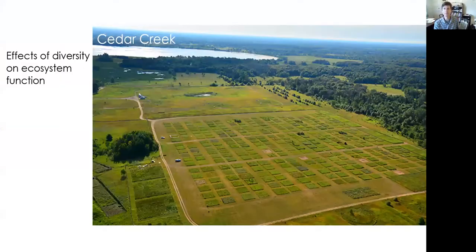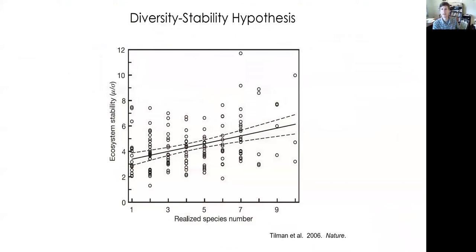What does plant diversity have to do with ecosystem function? Researchers at the University of Minnesota have been evaluating this at a place called Cedar Creek. One of the important results is the diversity-stability hypothesis, tested and found to be real. Tilman and others published this in Nature: the number of species present in a community is associated with the stability of primary productivity in that community. Communities that are more diverse are more stable — important when we depend on biomass production.